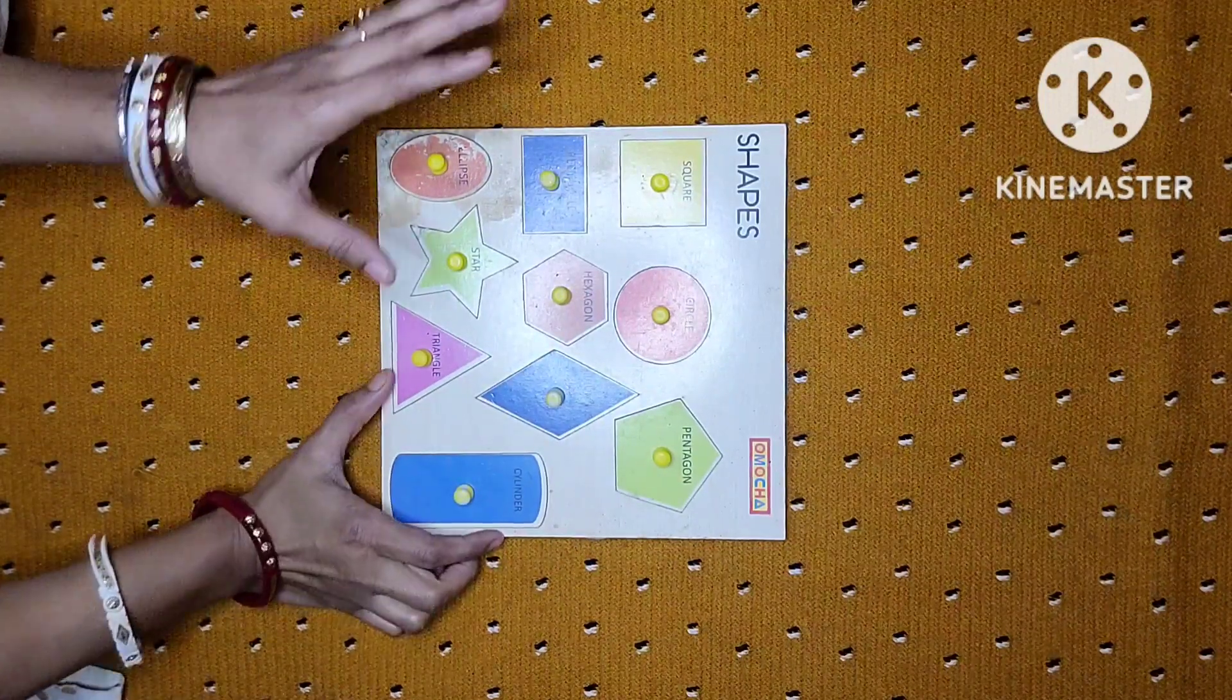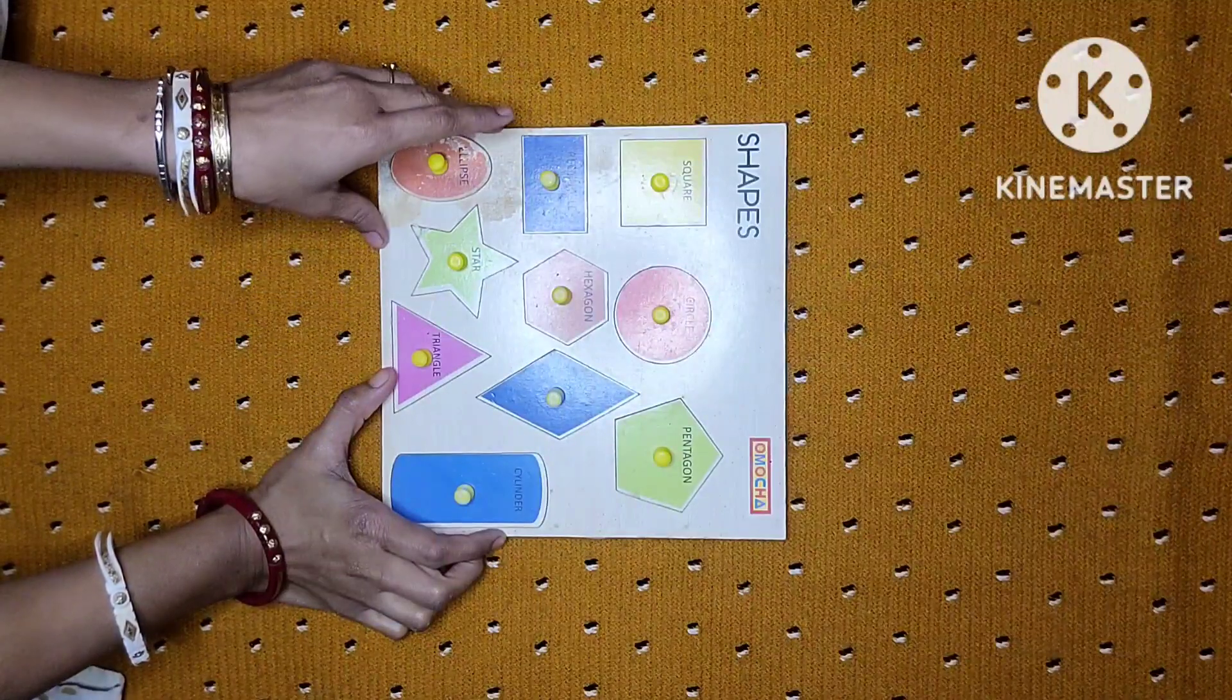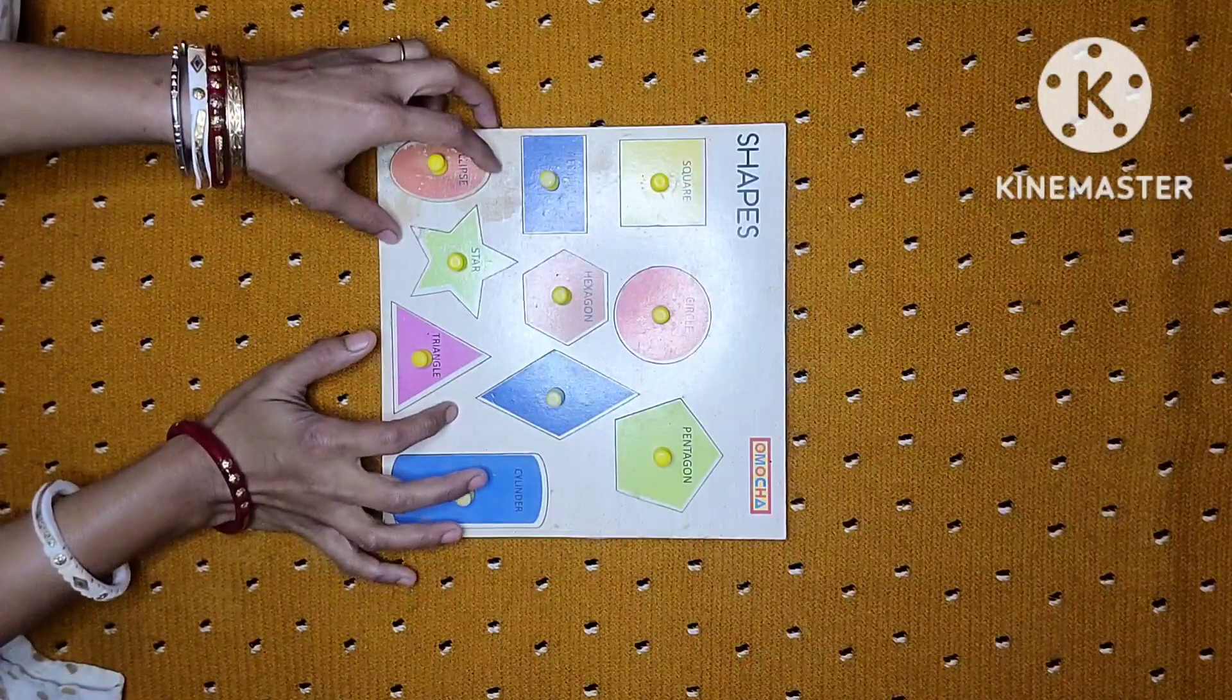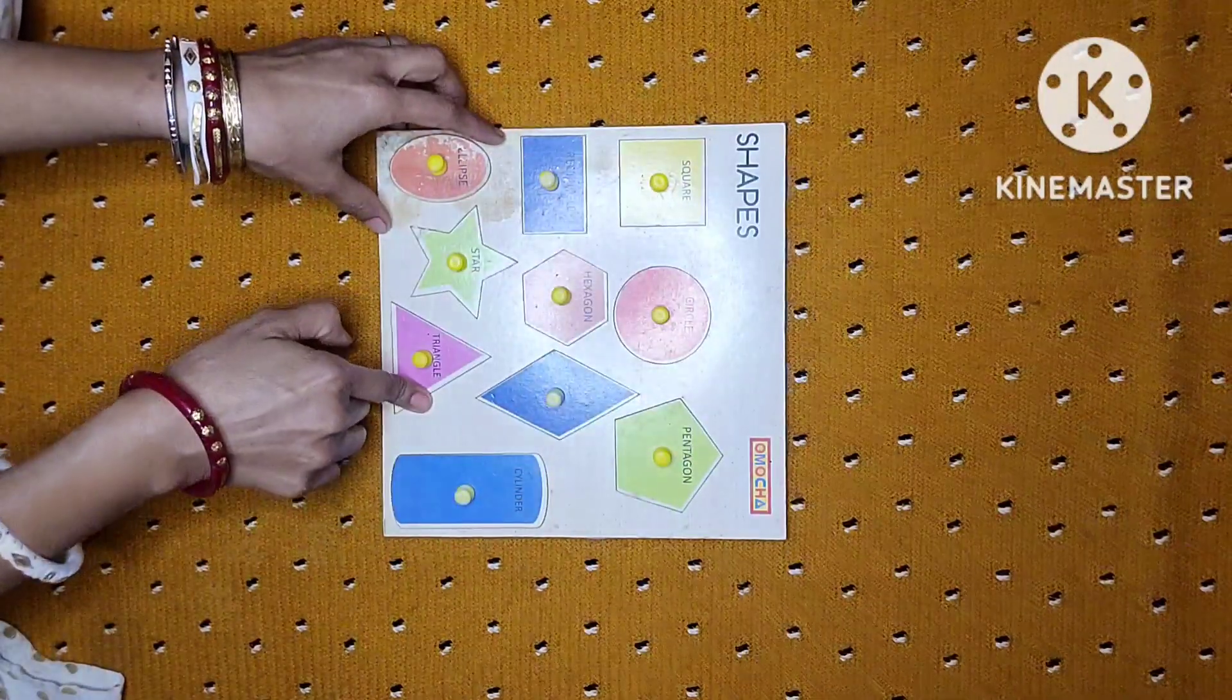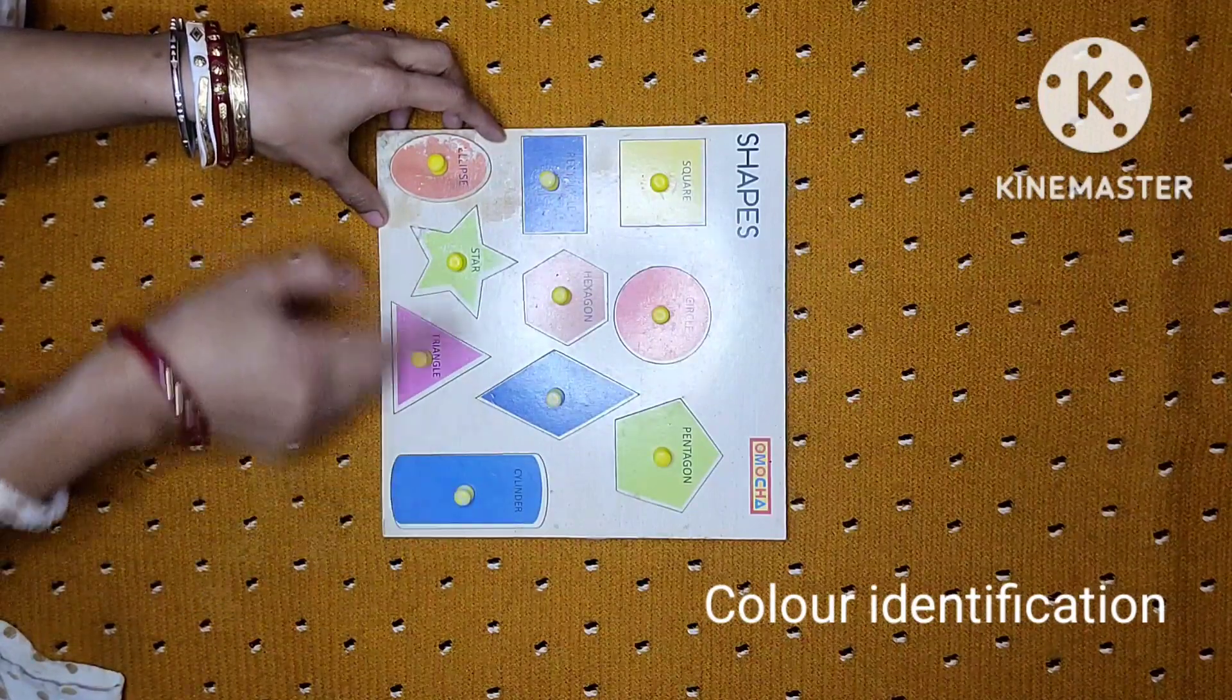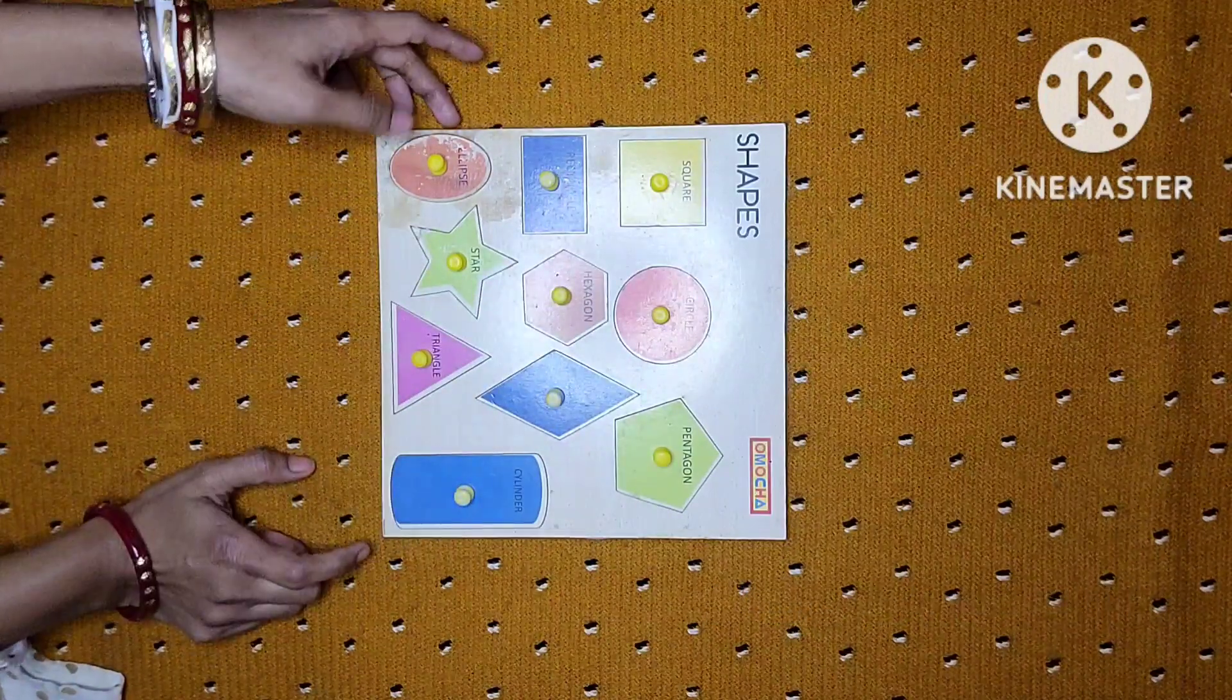So it is very much necessary for a child for the pre-writing activity - it's a pre-writing activity. Next is you can see different colors - blue, sky, pink, green, red, orange, yellow.